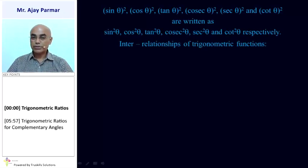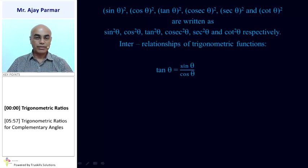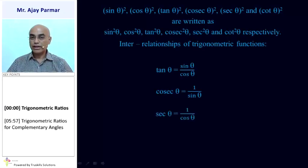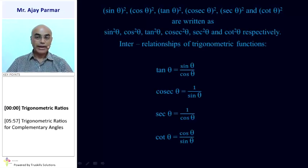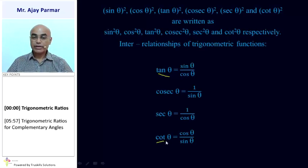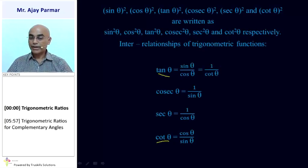The interrelationships that you need to remember: tan theta is sin theta upon cos theta. Cosec theta is 1 upon sin theta. Sec theta is 1 upon cos theta, and cot theta is cos theta upon sin theta. Also, tan theta and cot theta have exactly inverse answers, so tan theta can also be written as 1 upon cot theta, and cot theta can be written as 1 upon tan theta.